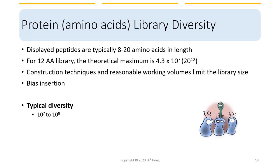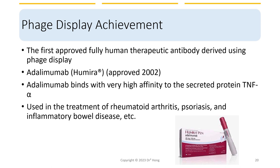Phage display has been used extensively for the discovery and development of therapeutic antibodies. For example, the antibody adalimumab, or brand name Humira, which is used to treat rheumatoid arthritis and other autoimmune diseases, was discovered using phage display and was first approved in 2002 by the US FDA. Adalimumab can bind to TNF-alpha with very high affinity and blocks its immunological action.